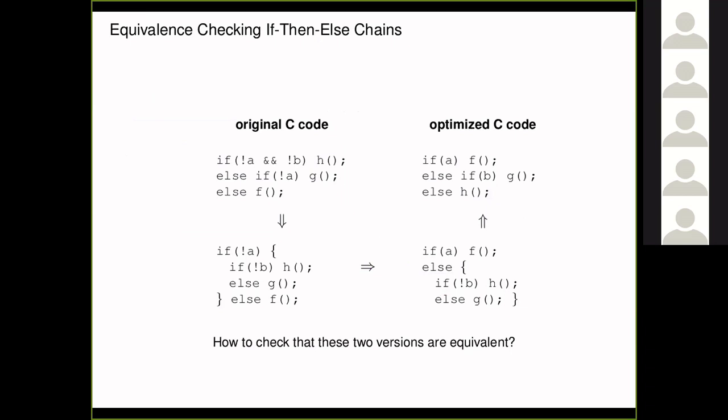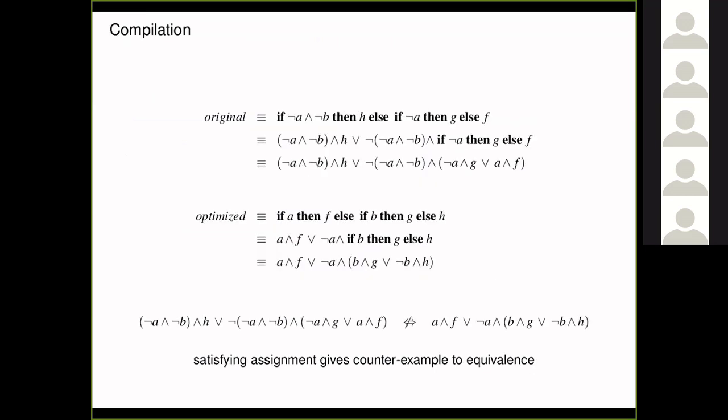Here's a quick introduction to how to use SAT for something interesting. We have a C code on the left — an original version — and then an optimized one. You want to know whether the original and optimized code are equivalent. We can encode this into SAT: compile away the if-then-else, get a propositional formula, capture the side effects of F, G, H by one Boolean variable each for both versions, then ask whether it's possible to make the two formulas different — i.e., find variable assignments to A, B and F, G, H such that the two formulas differ. You ask the satisfiability of that formula.